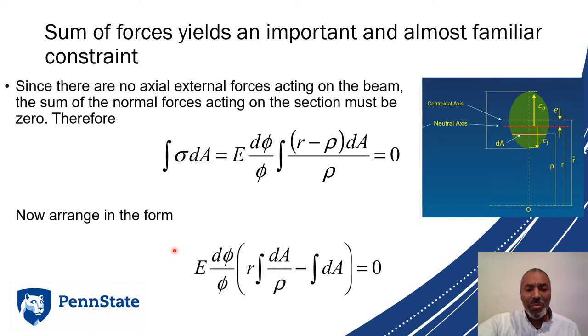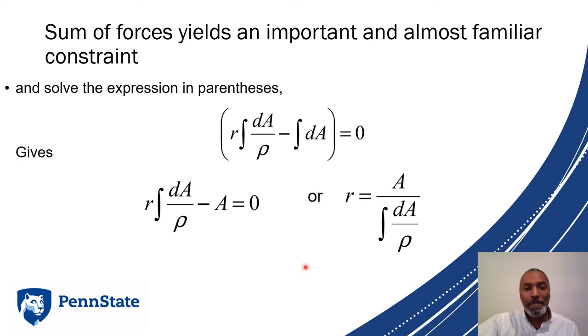Now we can arrange in the form shown, and we can pull out constants. The whole thing has to be zero, which means the term in parentheses has to be zero as well. We can rearrange it to get r equals A over the integral of dA over rho, which is the equation of the neutral axis for a curved beam.